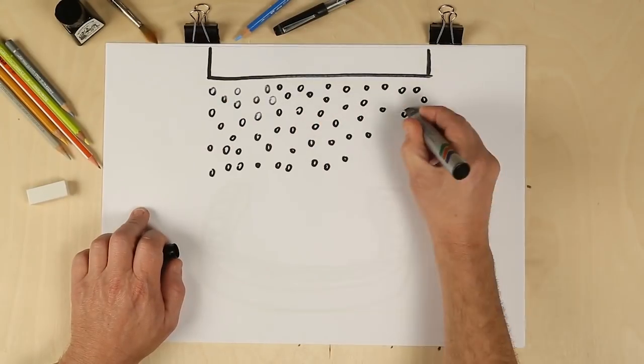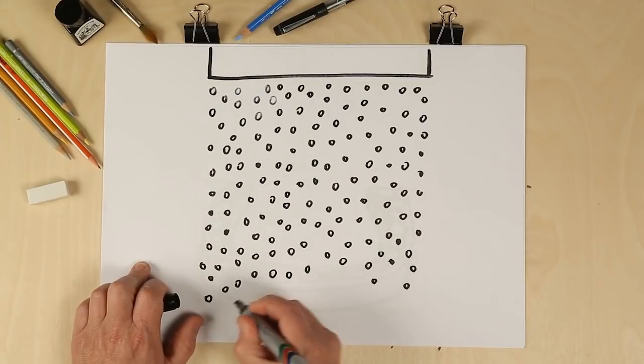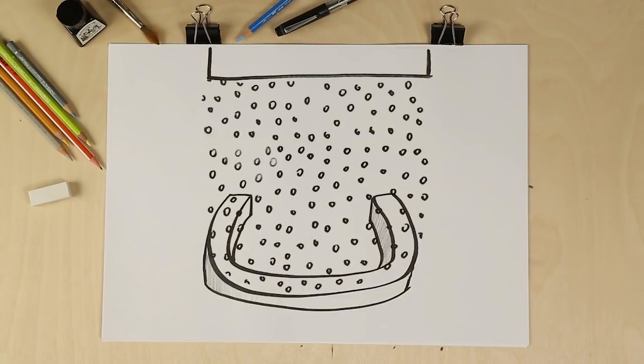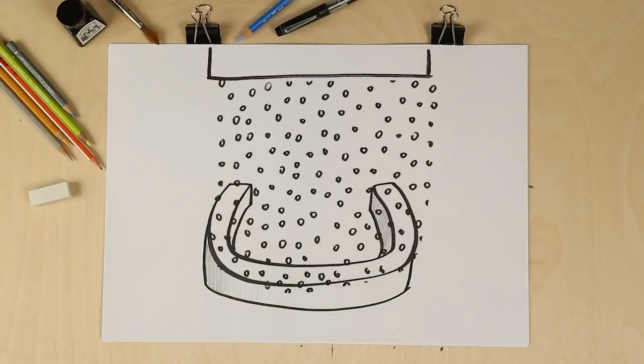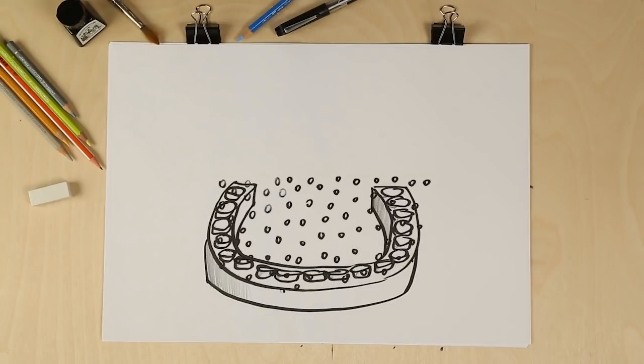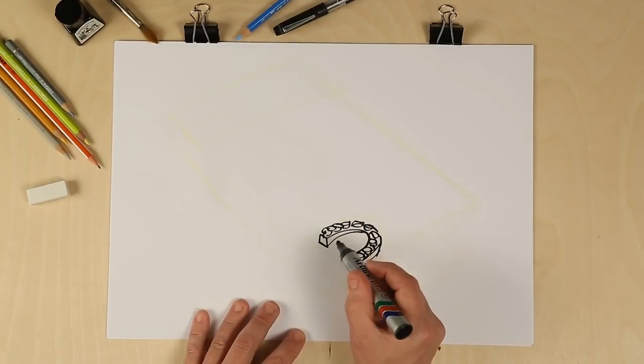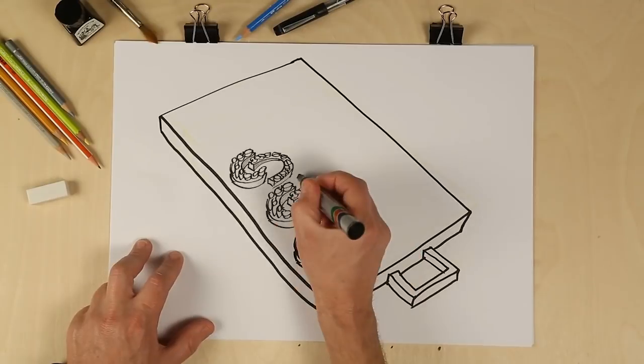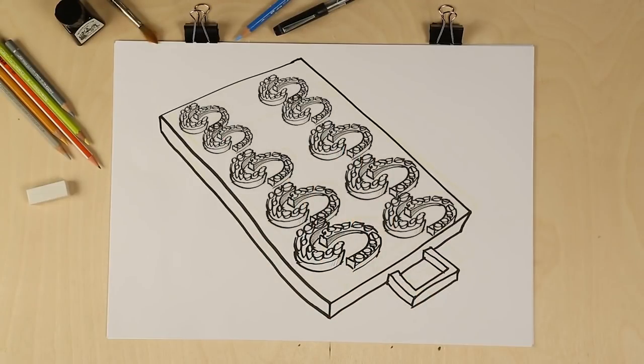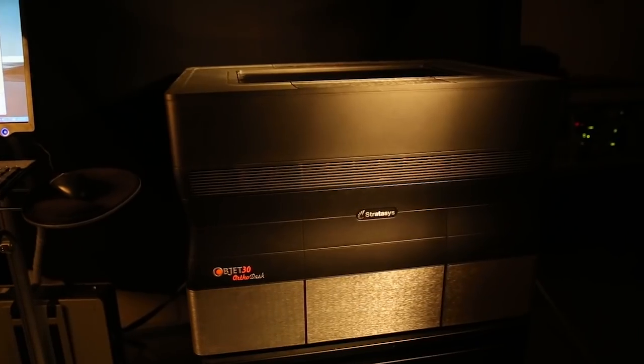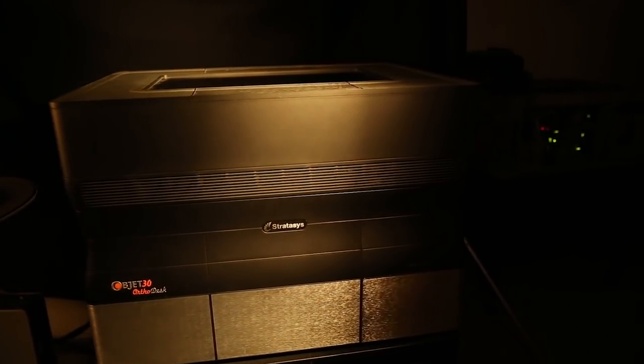It uses Object inkjet 3D printing technology to print ultra-fine layers of material for smooth, accurate models. And you can create as many as 20 models per print run. Just like larger, more expensive systems, Object 30 Ortho Desk gives you the power of cutting-edge technology at a price you can afford.